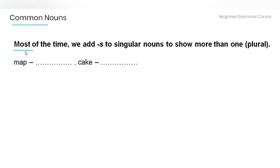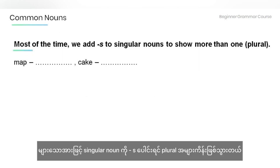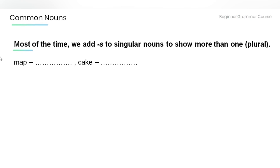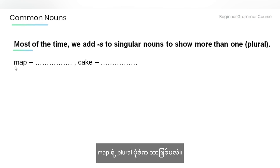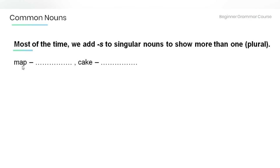Most of the time we add S to singular nouns to show more than one — plural. What is the plural form of the word map? Maps. The word cake? Cakes.